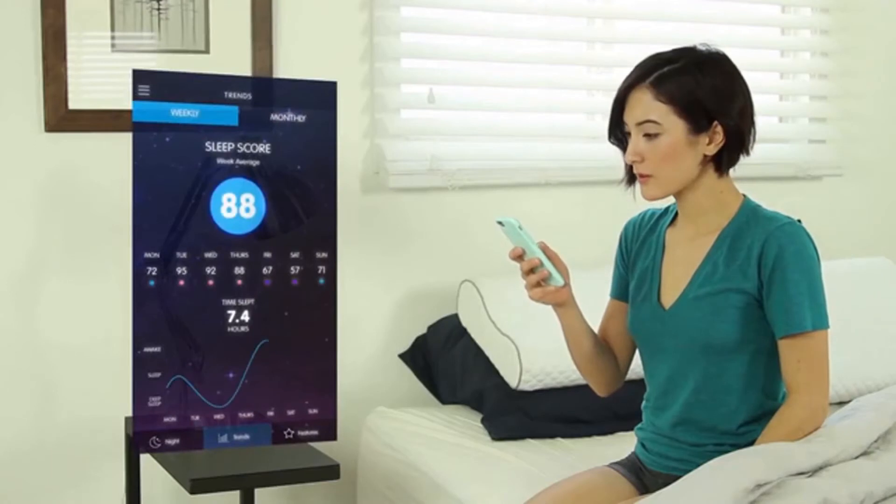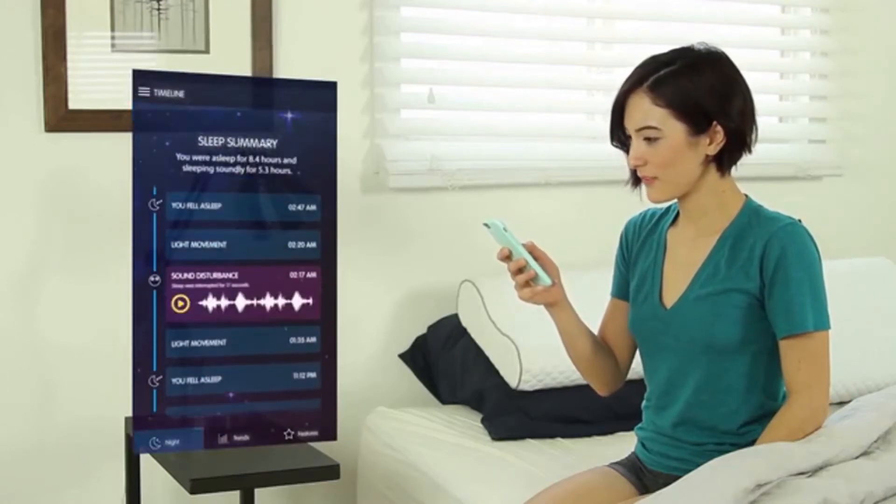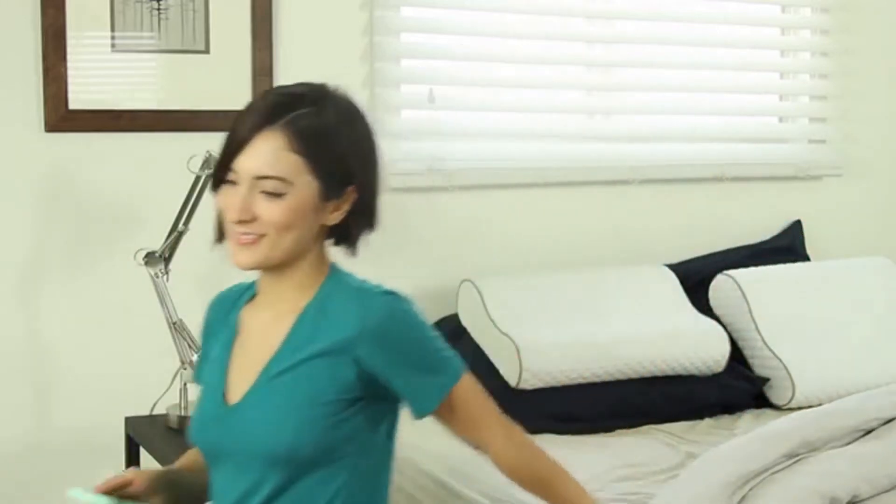Our sensors monitor your sleep and give you a sleep score. If your sleep's interrupted at 2am, you should be able to hear what it was, so you can adjust your surroundings to perfect your sleep.